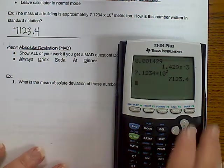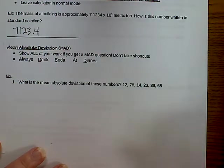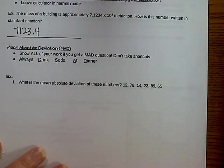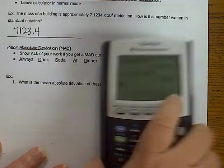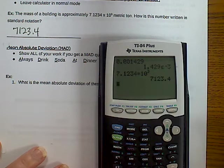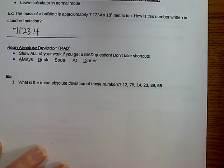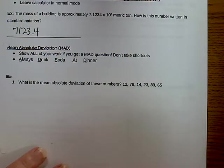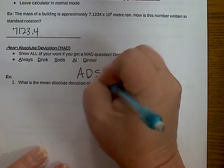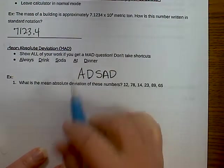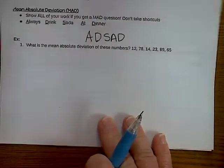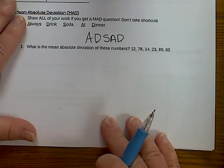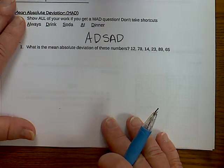Mean absolute deviation. MAD. We should know this. We've been doing this forever. Please don't take shortcuts. Make sure you do all the steps and you show and write them down because you can't always do everything right here in this window. So, always drink soda at dinner is our acronym to remind you, ADD, SAD. We've got ADD, divide, subtract, ADD, divide. So we've got this to remind you about ADD, SAD. What is the mean absolute deviation of these numbers? Now, I want you to change a number. I want you to take this 12, and I want you to make it a 16.